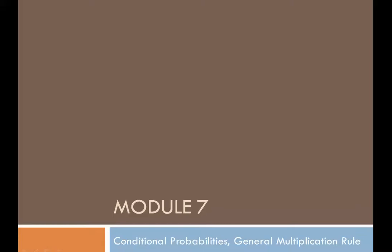Now we're ready to continue looking at some more rules governing probability. We're going to look at conditional probabilities and then look a little bit more at the general multiplication rule, and how those two rules really affect each other.